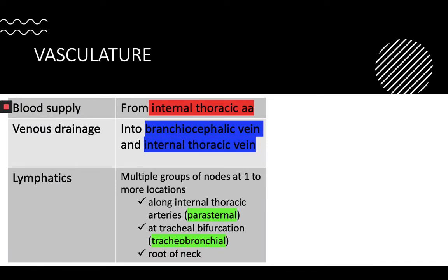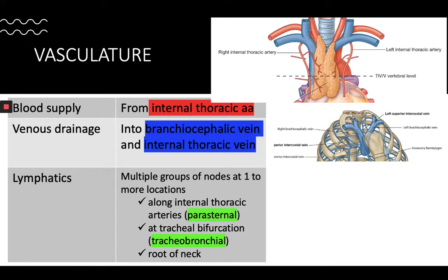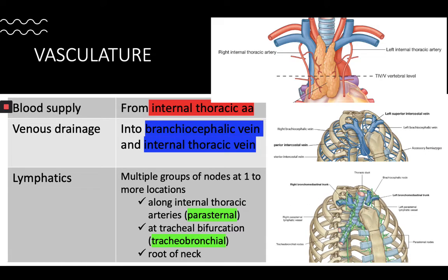Blood supply comes from small branches which originate from the internal thoracic arteries. The venous drainage is usually into the left brachiocephalic vein and the internal thoracic veins. The lymphatic drainage returns to multiple groups of nodes: along the internal thoracic arteries as parasternal nodes, the tracheobronchial nodes at the tracheal bifurcation, or nodes in the root of the neck.